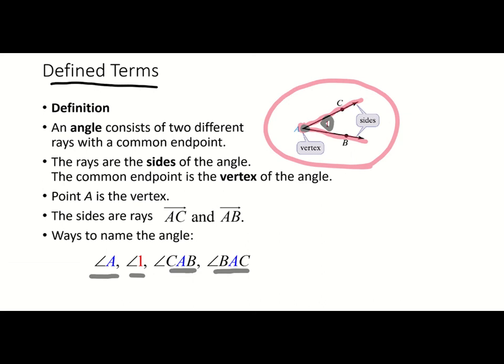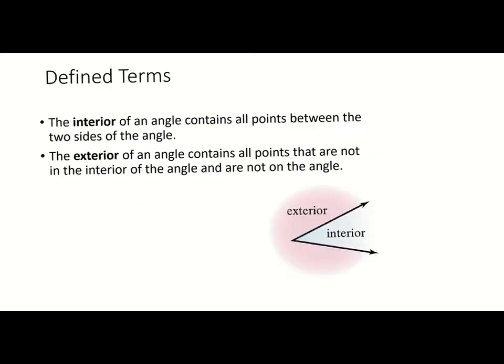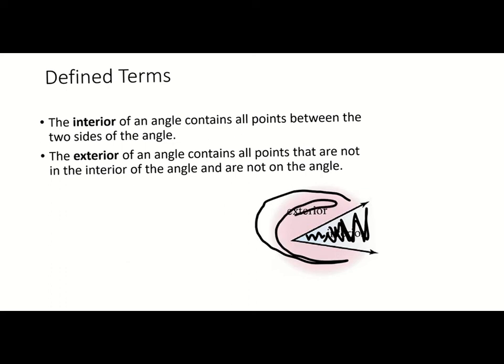Here are some more terms which you're familiar with. We will be talking about the interior and the exterior of an angle. The interior — think of interior decorating, you decorate the inside — so the interior is always the inside of the angle. The exterior is anything outside of that angle, any points not in the interior and not on the angle. Think of 'exit' — exterior is the outside.